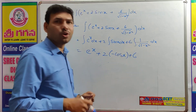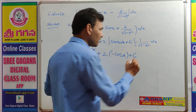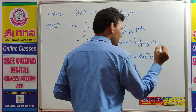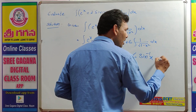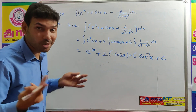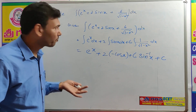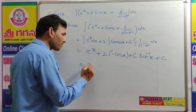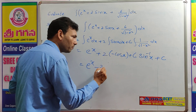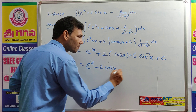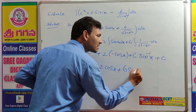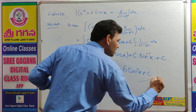The integral of 1/√(1 - x²) — direct formula gives sin inverse x. So integration gives the answer. Since this is an indefinite integration, there are no limits. Direct answer: e^x plus 2 times minus cos(x) gives minus 2cos(x), plus 6 sin inverse x plus C.